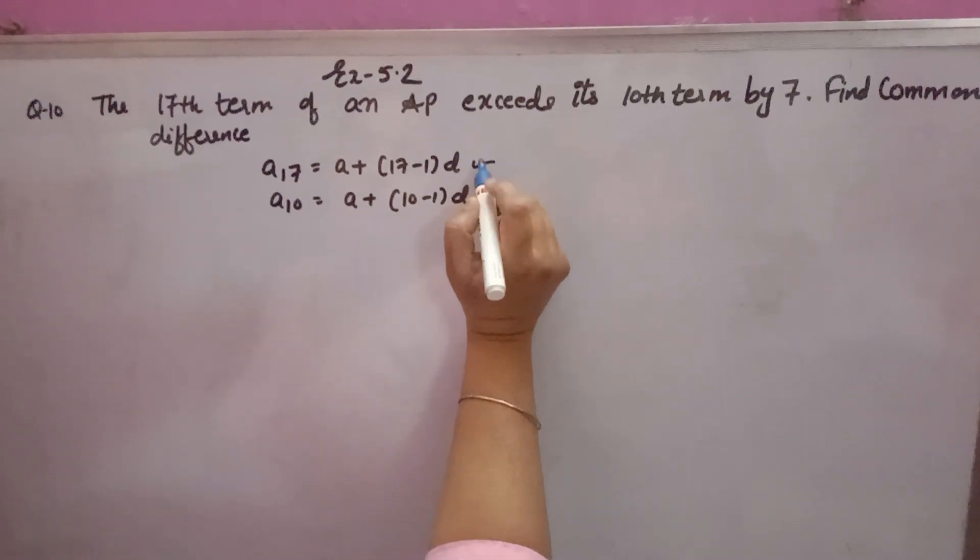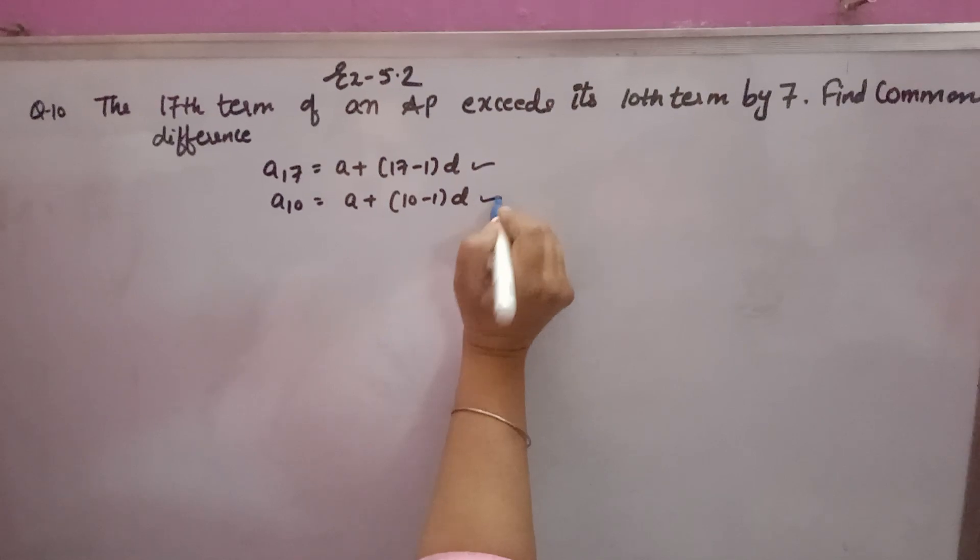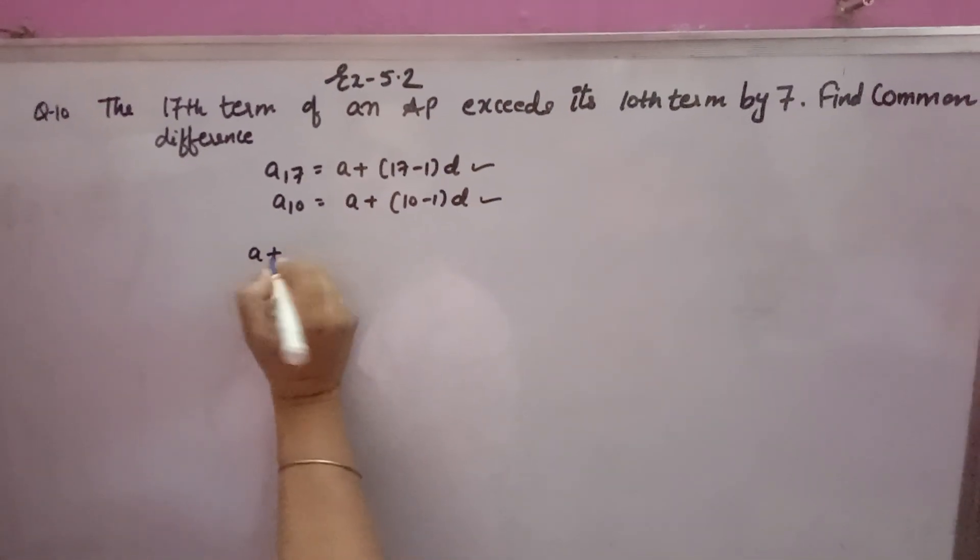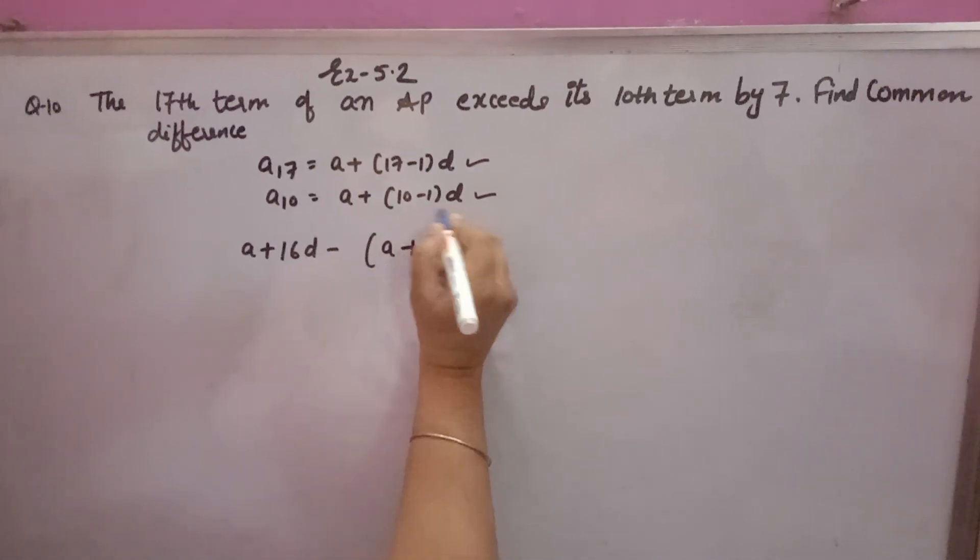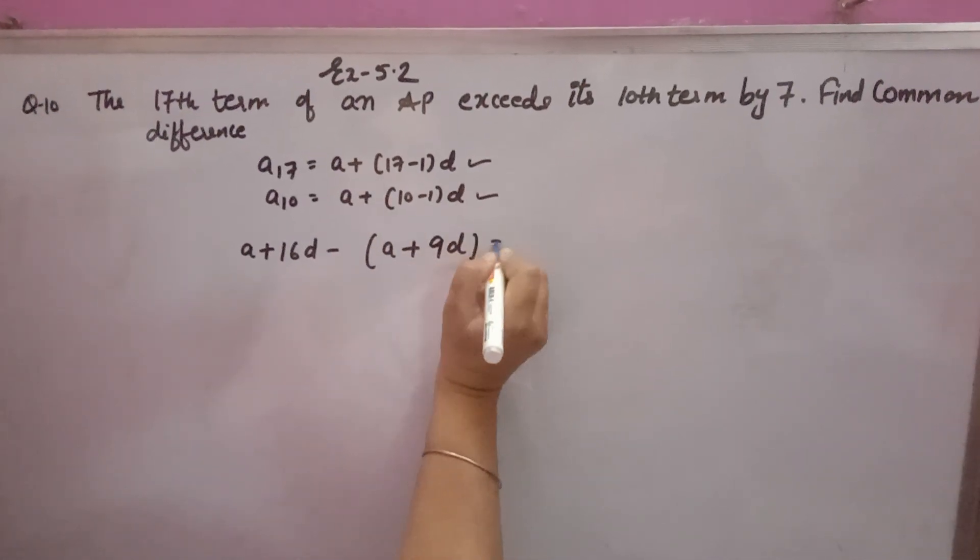Now this term is 7 more than this term, that means A plus 17 minus 1, 16D minus A plus 10 minus 1, 9D is equal to 7.